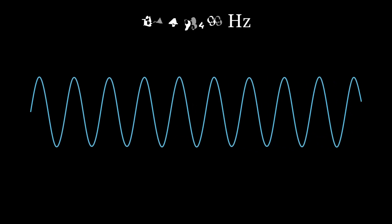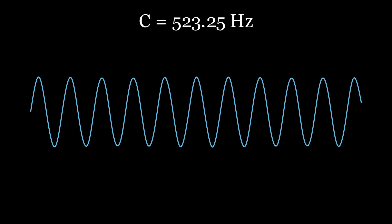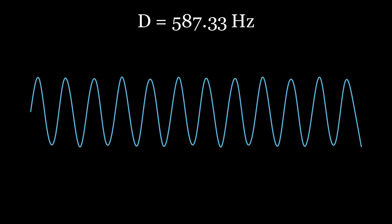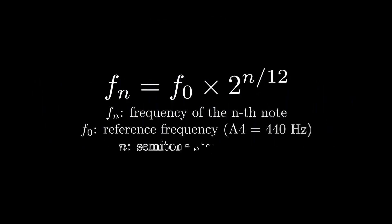If we change it to 494 Hz, note B is produced, and so on. To find the frequency required to produce a specific note, the following equation is used.